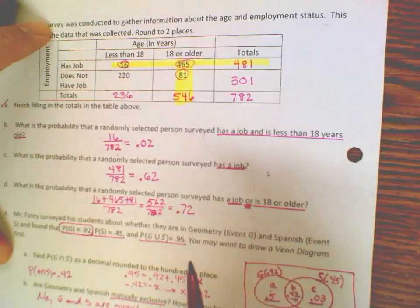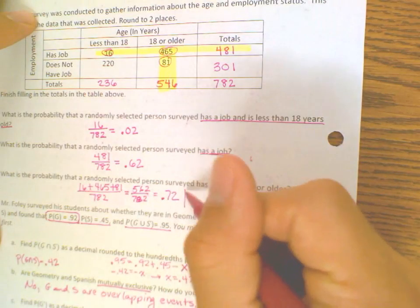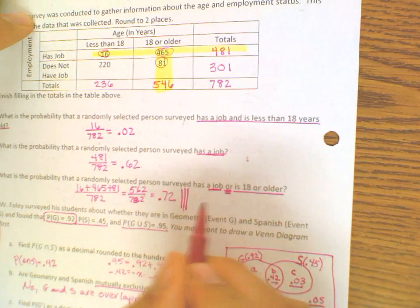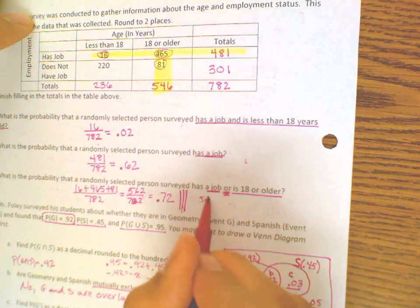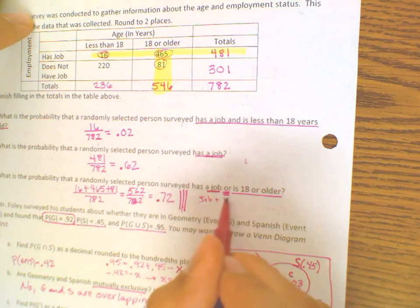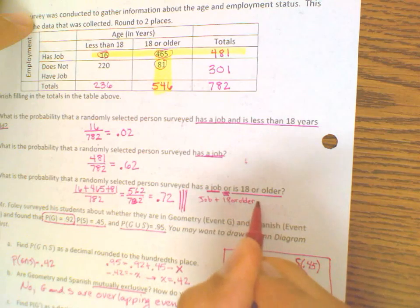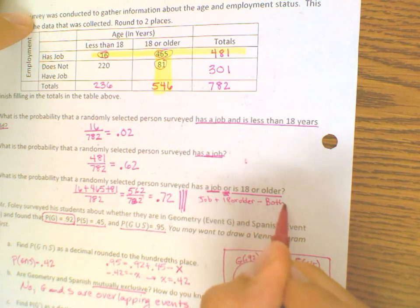However, if you're trained in solving this by using the formula, what you're thinking is, I need to add all the people that have a job, I need to add all the people that are 18 or older, and then I need to subtract the people who have both.